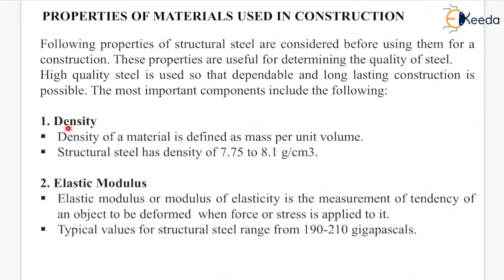The first property is density. Density of a material is defined as mass per unit volume. Structural steel has a density of 7.75 to 8.1 grams per centimeter cube.